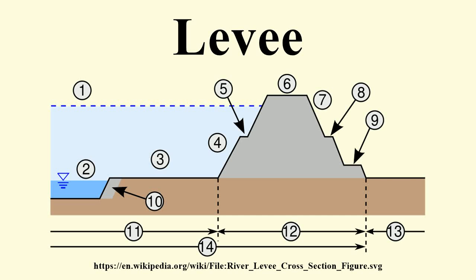A levee, dike, embankment, flood bank, or stop bank is an elongated naturally occurring ridge or artificially constructed fill or wall which regulates water levels. It is usually earthen and often parallel to the course of a river in its floodplain or along low-lying coastlines.